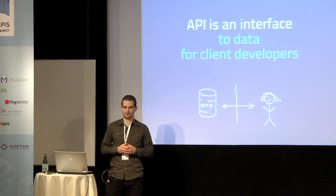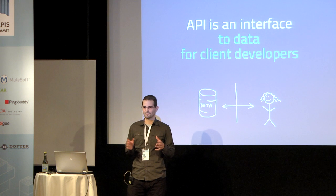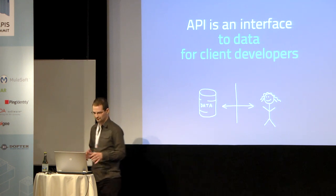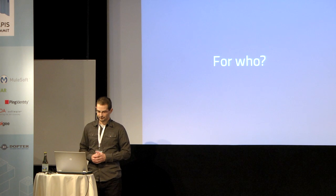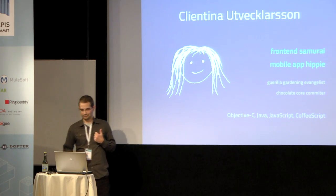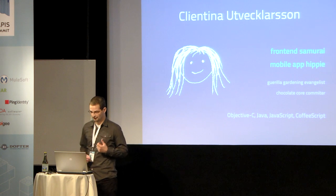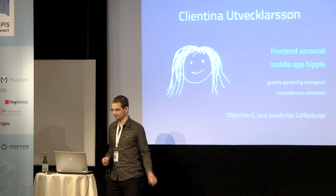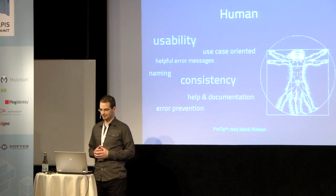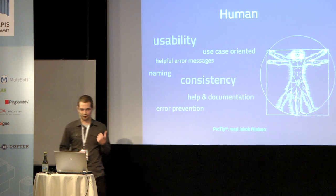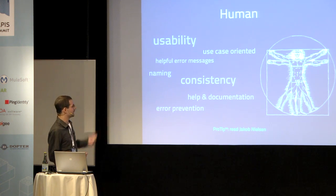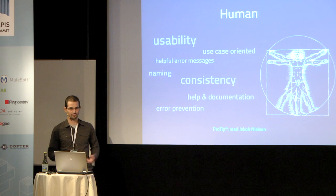Who are these kind of developers? Let me introduce you. This is a typical client developer — Clientina. She's a front-end developer, a mobile app developer, and she thinks in terms like Objective-C, JavaScript, and this kind of stuff. She's obviously a human, she's not a machine. She uses your API. And you should design your API for a human. You should take care about usability, consistency, and those things. You already know that from web design — read Jacob Nielsen.